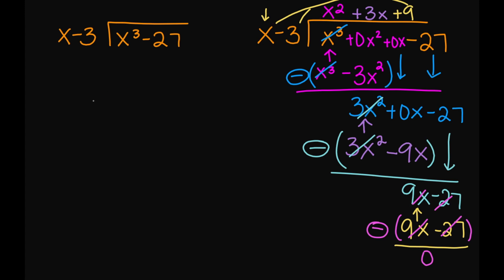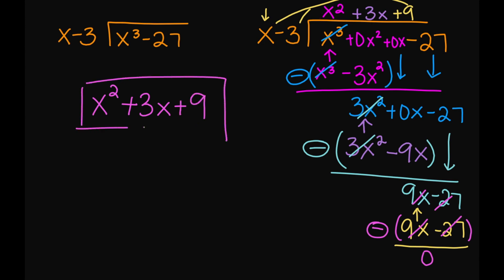Your quotient is x squared plus 3x plus 9. Since there is no remainder, this is your final answer.